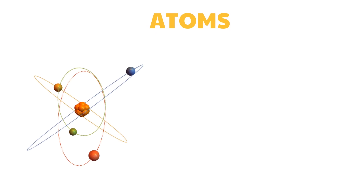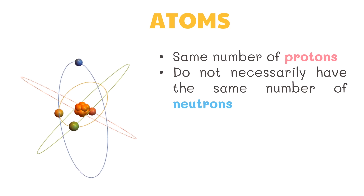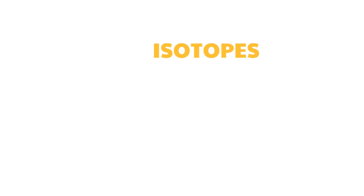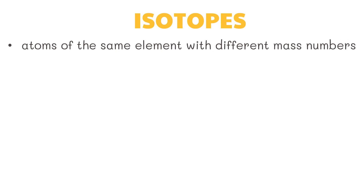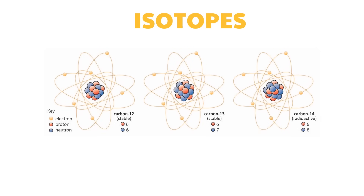All atoms of the same element have the same atomic number, meaning they have the same number of protons. However, atoms do not necessarily have the same number of neutrons. Atoms with the same number of electrons and protons but a different number of neutrons are called isotopes. Isotopes are atoms of the same element with different mass numbers. The presence of isotopes disproved Dalton's postulate that all atoms of the same element have identical properties. If isotopes of an element have the same number of electrons, they will have the same chemical properties, as chemical characteristics depend on the number of electrons, not neutrons.